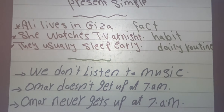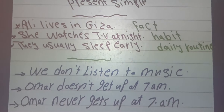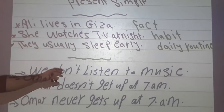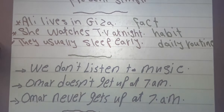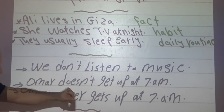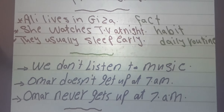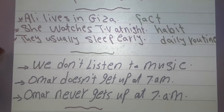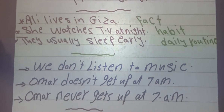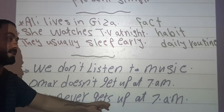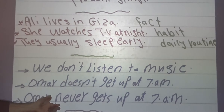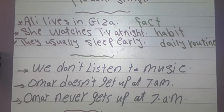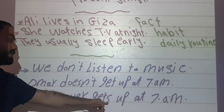Let's make negative examples. Number 1: We don't listen to music — we use 'don't' with plural pronouns. Number 2: Homer doesn't get up at 7 o'clock — we use 'doesn't' plus the infinitive verb. But pay attention: Homer doesn't get up versus Homer never gets up. With 'doesn't' we use the infinitive, but with an adverb of frequency we keep the S.